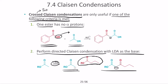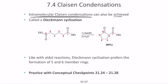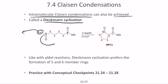Cross Claisen condensation involves two different esters, whereas regular Claisen condensation refers to a single ester forming its own condensate. Intramolecular Claisen condensation can also be achieved — we call that Dieckmann cyclization. When you have diesters at both ends of a carbon chain (terminal diesters), one ester leaves and the remaining carbon attaches to the alpha carbon, resulting in cyclic ring formation. Dieckmann cyclization prefers formation of five- or six-membered rings.